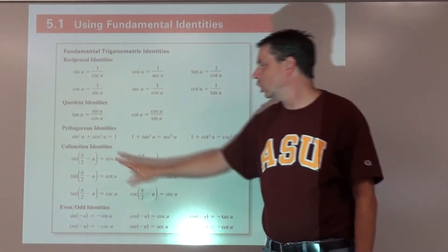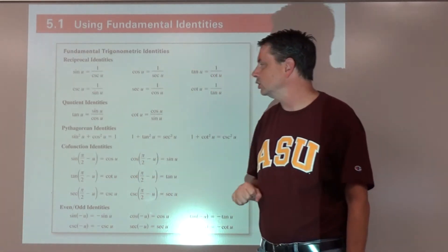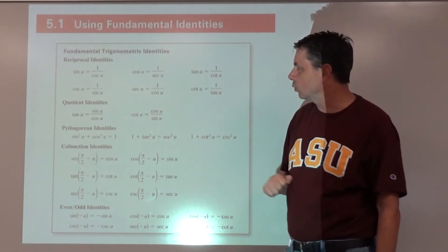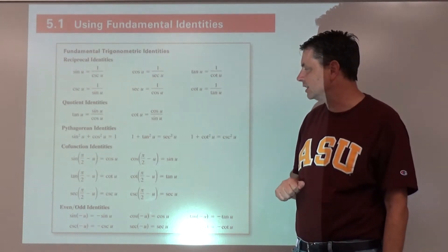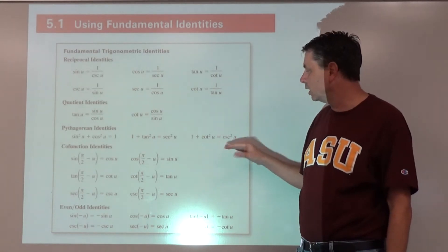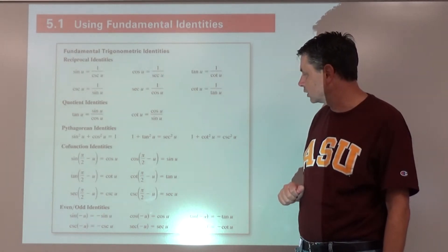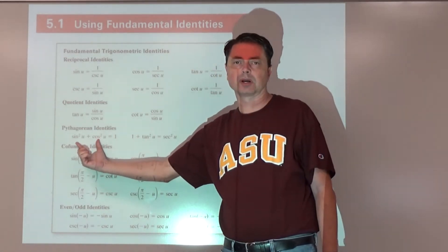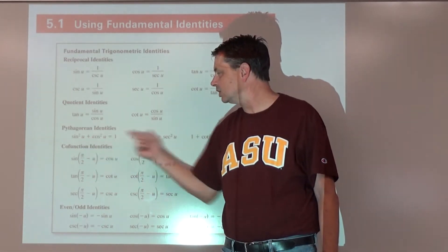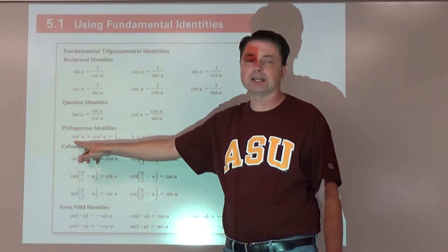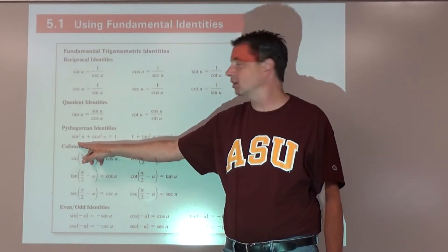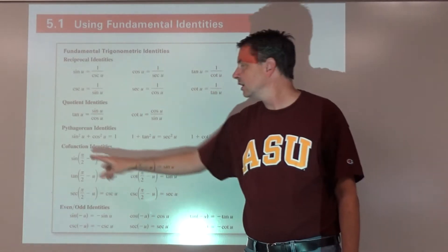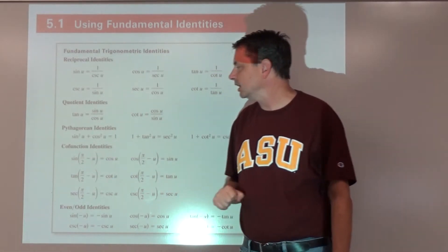Pythagorean identities — there are nine total, all coming from sine squared u plus cosine squared u equals one. Another variation: one plus tangent squared u equals secant squared u, and one plus cotangent squared u equals cosecant squared u. To get the others, we algebraically manipulate each of these — for example, to isolate sine squared u, just subtract cosine squared u from both sides.